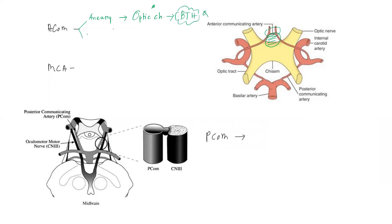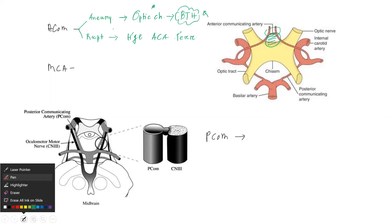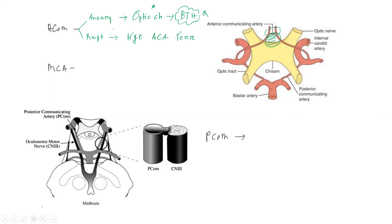But if there is a rupture, there will be hemorrhage in the anterior cerebral artery territory. Whenever there is anterior cerebral artery territory hemorrhage, it can cause bilateral lower limb weakness with sensory loss.